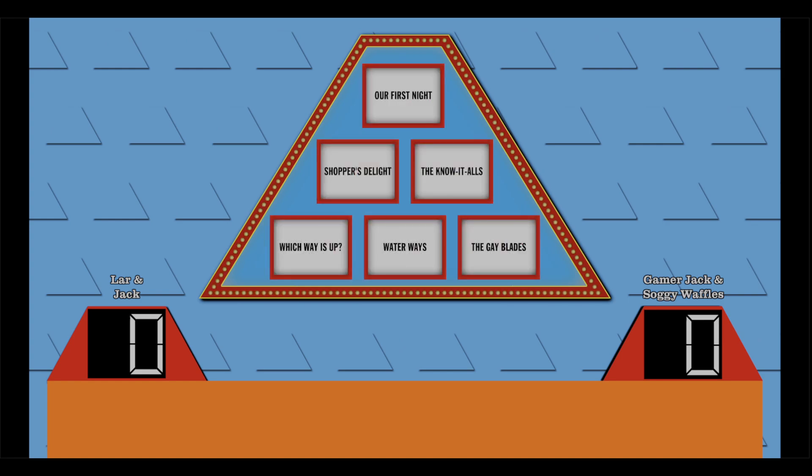Let's give away some money. So here are our subjects for this game. It's our first night. Sharp as the light. The know-it-alls. Which money is up? Waterways. And the gay blades. Seamus, you have a weird sense of humor. Which twin is giving clues first?